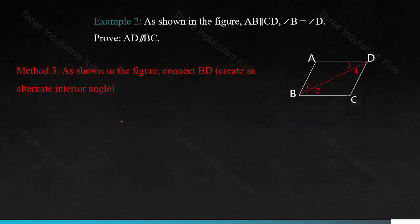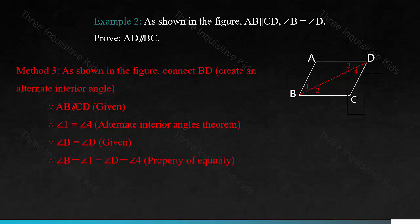Method 3: as shown in the figure, connect BD to create an alternate interior angle. Because AB is parallel to CD, therefore angle 1 equals angle 4 — alternate interior angles theorem. Because angle B equals angle D, that's given, therefore angle B minus angle 1 equals angle D minus angle 4, which means angle 2 equals angle 3, which means AD is parallel to BC, using the alternate interior angles theorem.